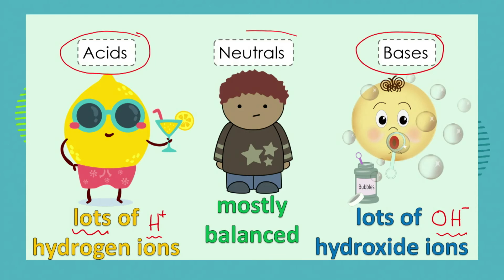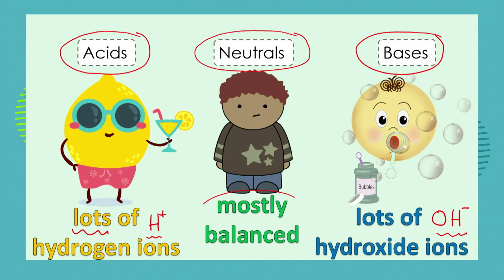What about neutrals? Neutral substances are not positive and not negative — not acidic, not basic. With neutral substances, the amount of hydrogen ions equals the amount of hydroxide ions, which causes the substance to be neither acidic nor basic, but neutral.